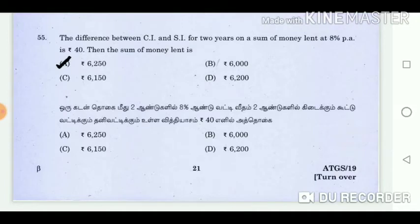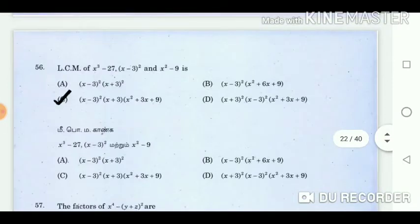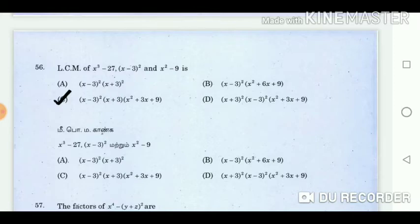Question 55: The difference between compound interest and simple interest for 2 years on a sum of money lent at 8% per annum is Rs. 40. Then the sum of money lent is? Answer: Rs. 6,250. Question 56: LCM of x cube minus 27, x minus 3 square, and x square minus 9 is? Answer: x minus 3 square into x plus 3 into x plus 3 into x plus 3.